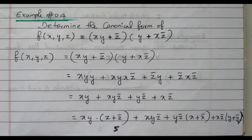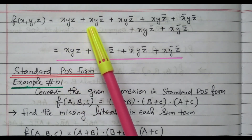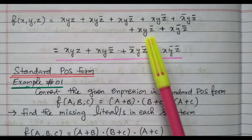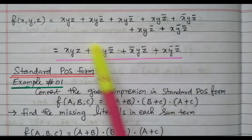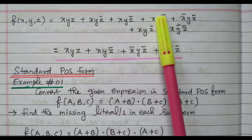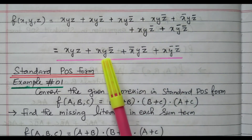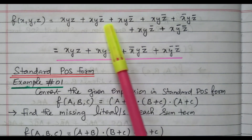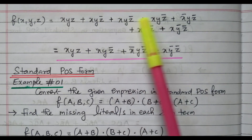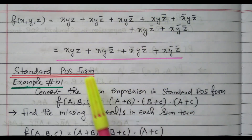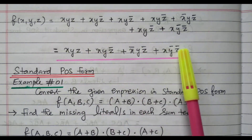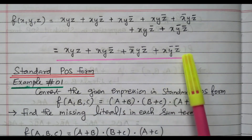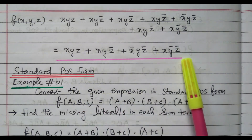Expanding all terms: XY(Z + Z̄) gives XYZ + XYZ̄. XYZ̄ stays as XYZ̄. YZ̄(X + X̄) gives XYZ̄ + X̄YZ̄. XZ̄(Y + Ȳ) gives XYZ̄ + XȲZ̄. So all expanded terms are: XYZ, XYZ̄, XYZ̄, XYZ̄, X̄YZ̄, XYZ̄, XȲZ̄. XYZ̄ appears four times — we write it only once. The final standard SOP form is: XYZ + XYZ̄ + X̄YZ̄ + XȲZ̄. All four product terms have all literals X, Y, Z available. That is called a standard SOP form.